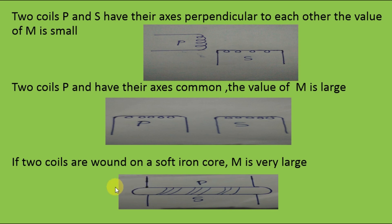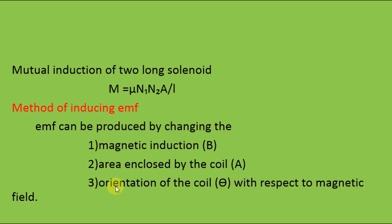The mutual inductance of two long solenoids is given by M = μ·N1·N2·A / l, where N1 and N2 are the number of turns in the first and second coils respectively.